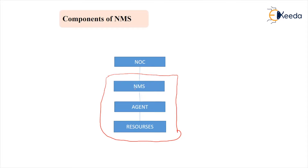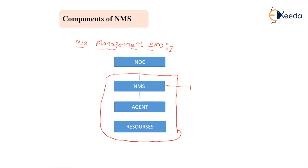Now we are discussing about the NMS — NMS is nothing but the Network Management System. NMS can control each and every element and data present inside the network. NMS contains information about two things: network elements and the data exchanged between them.